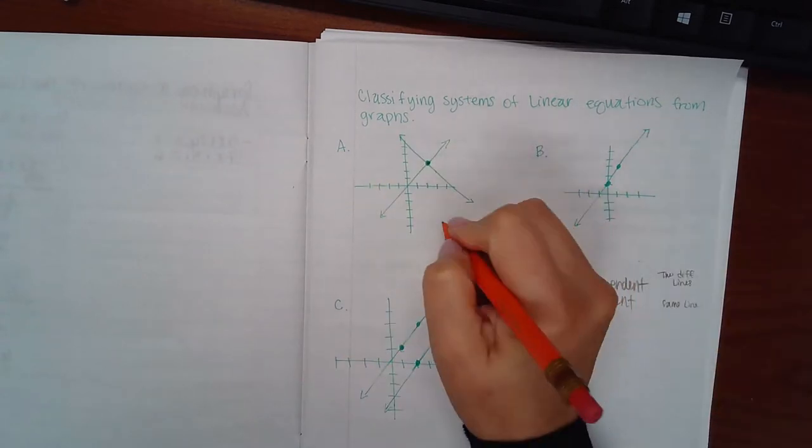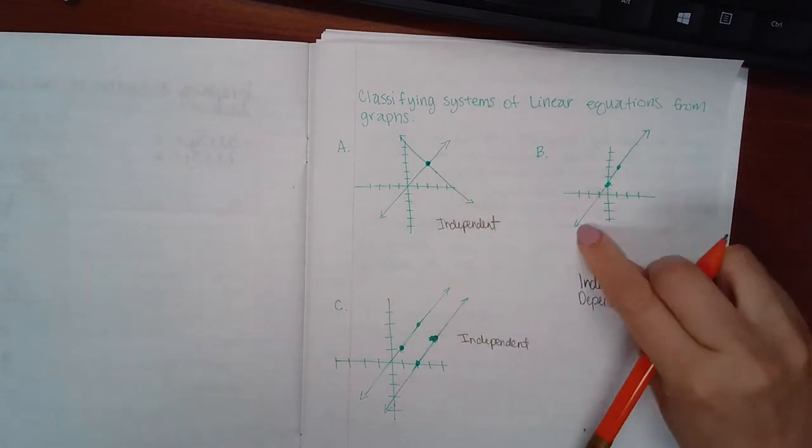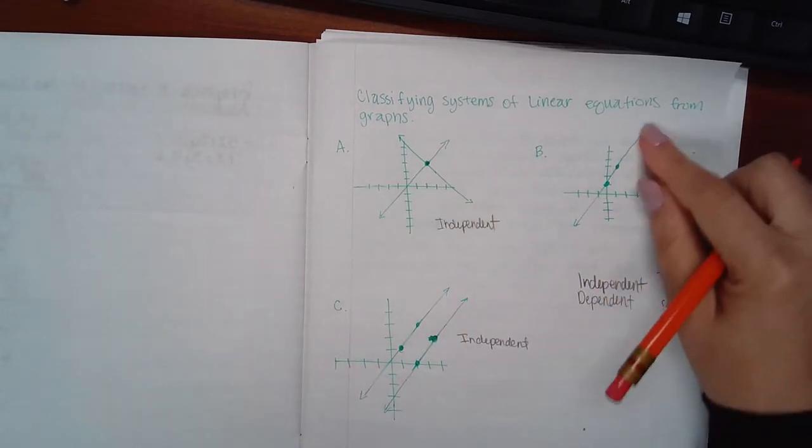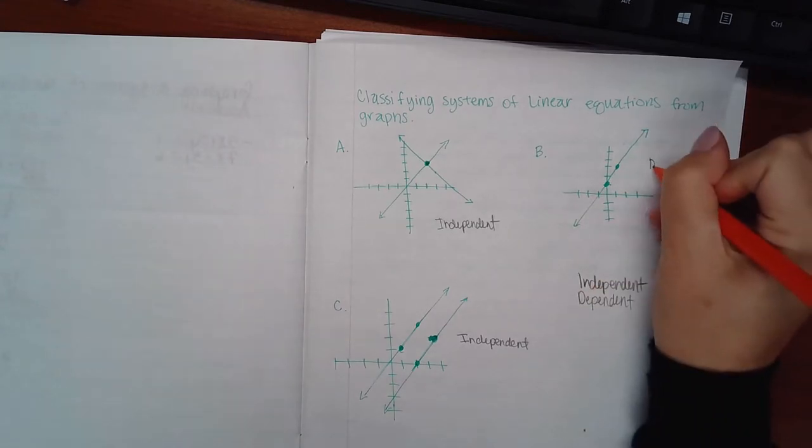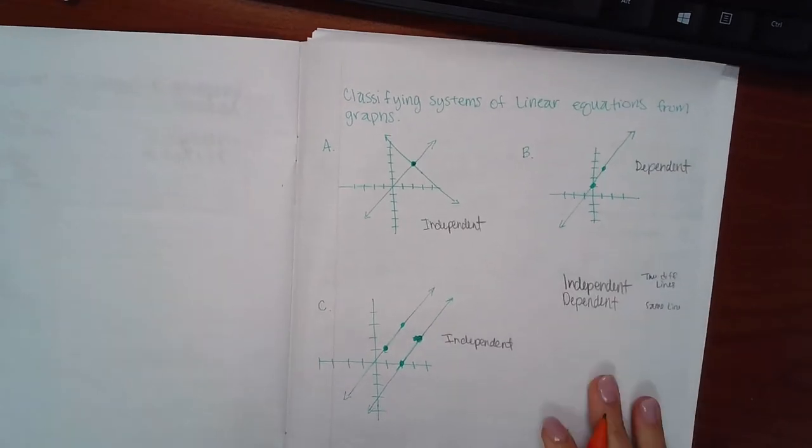And these are obviously two different lines, so this can be labeled independent. But here you have one line right on top of the other, the exact same line, so this is considered dependent.